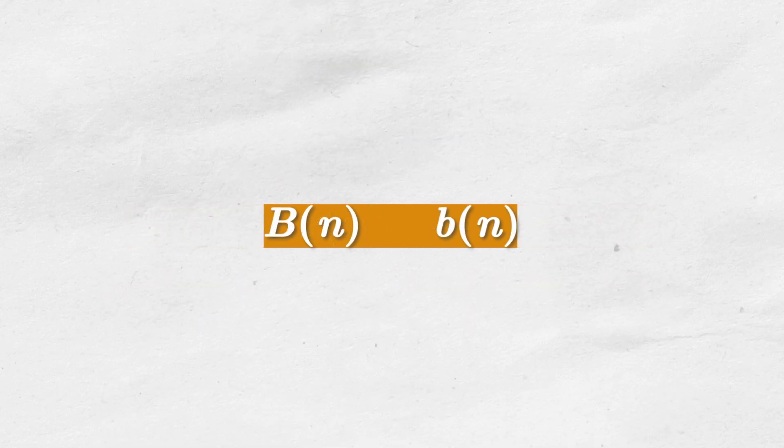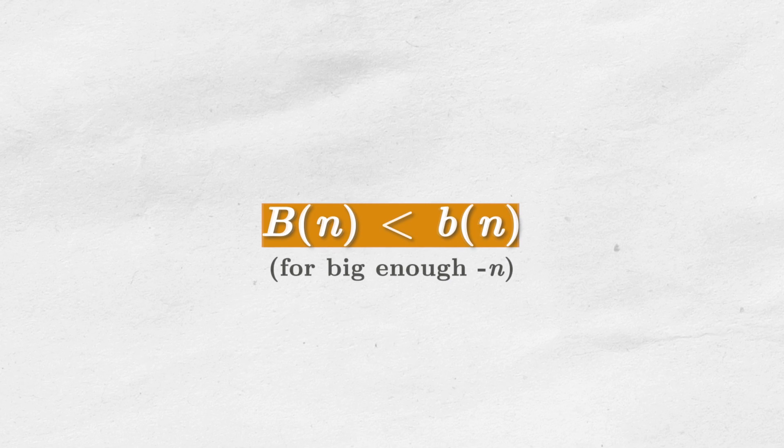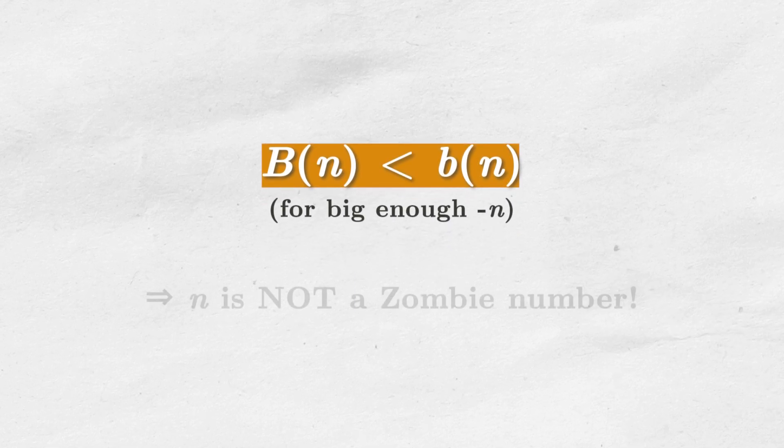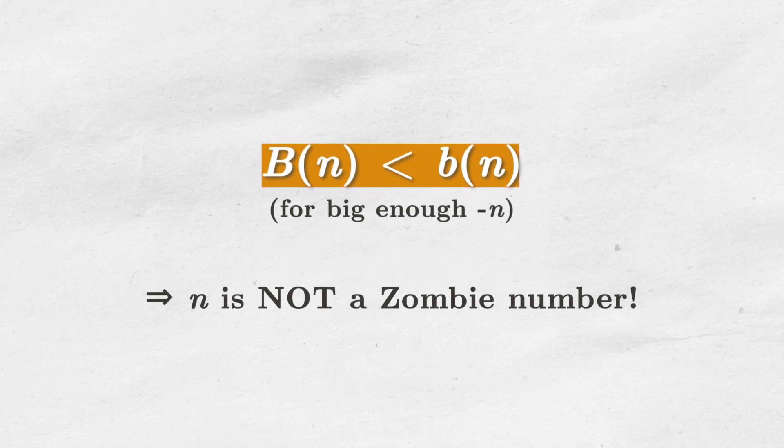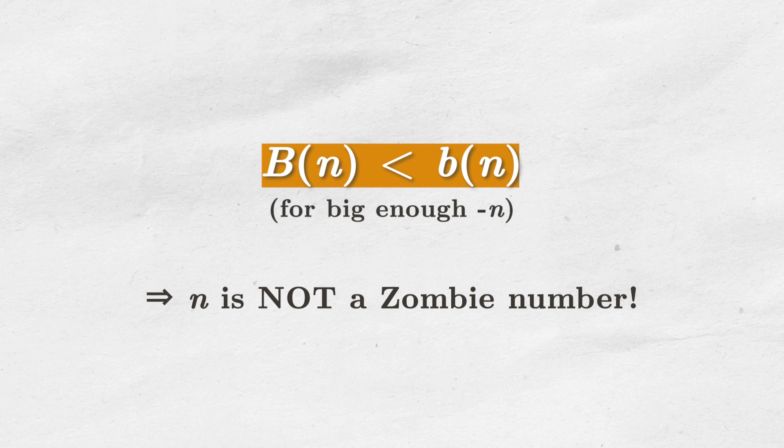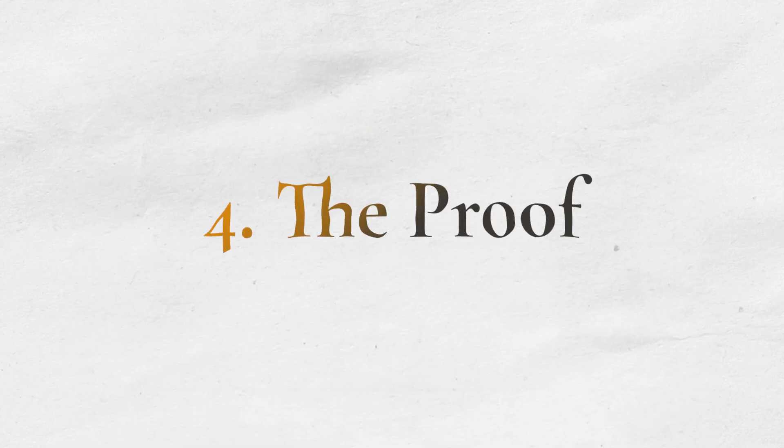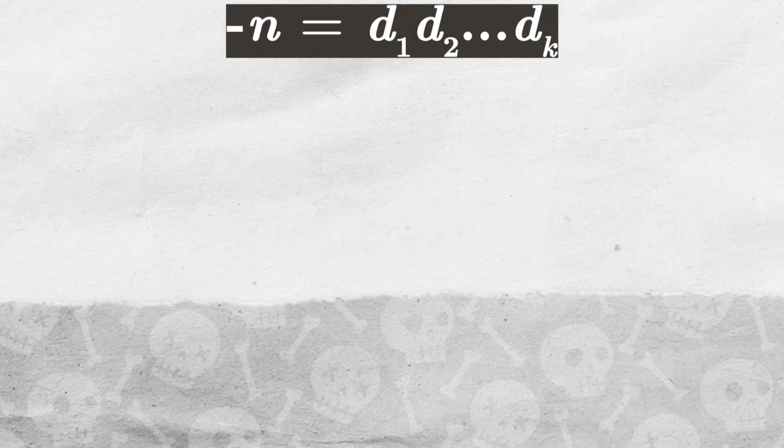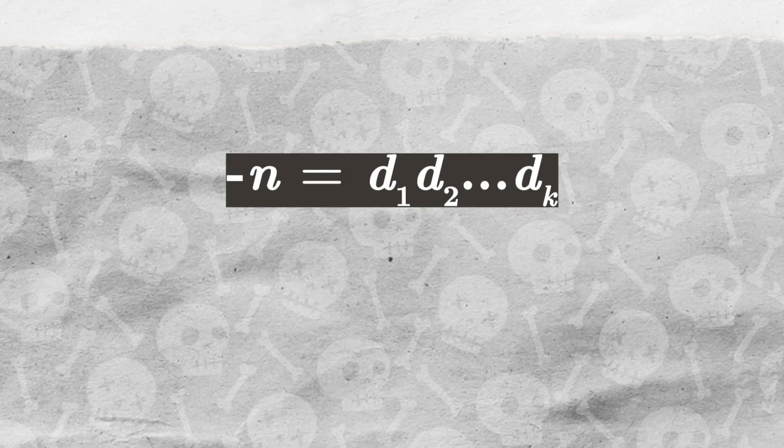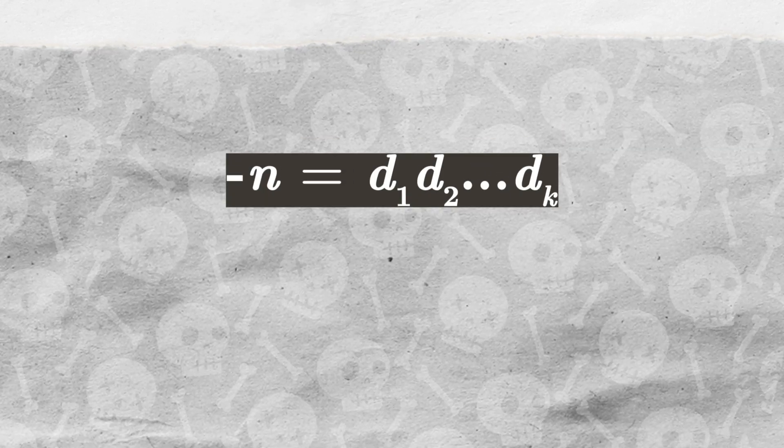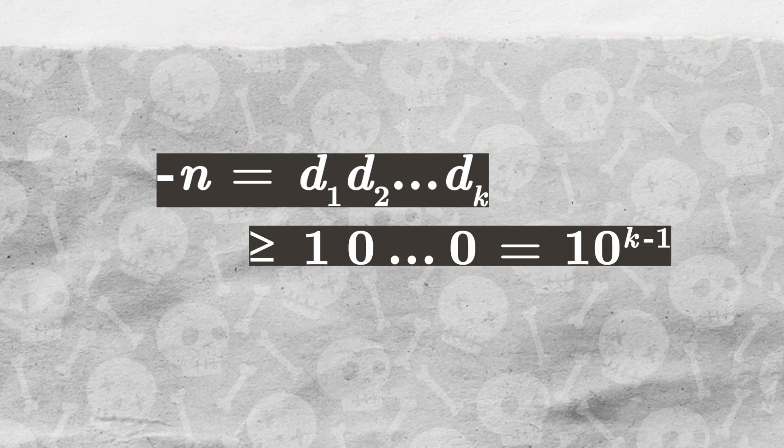Therefore, for big enough numbers, the inequality between boundaries will not be satisfied, so the zombie numbers will not be able to form. That's the idea, but will we achieve our goal? Let's see. The first boundary is simple. Since minus n is a k-digit positive number, we know it must be greater than or equal to 10 to the power of k minus 1.